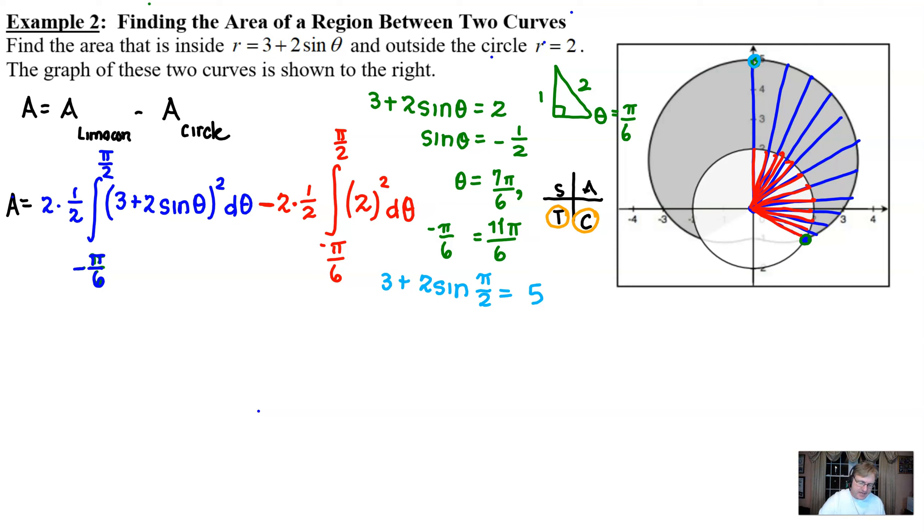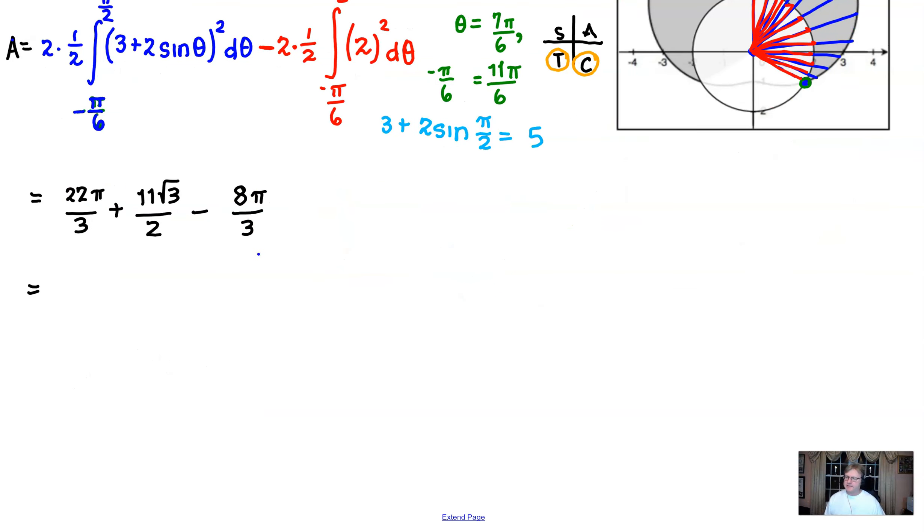If you were to type this into the calculator to verify whether or not it was correct, you would get something along the lines of 22π/3 + 11√3/2 for the limaçon, and then we get 8π/3 for just the circle portion. By the time we combine like terms, we end up with 14π/3 + 11√3/2.